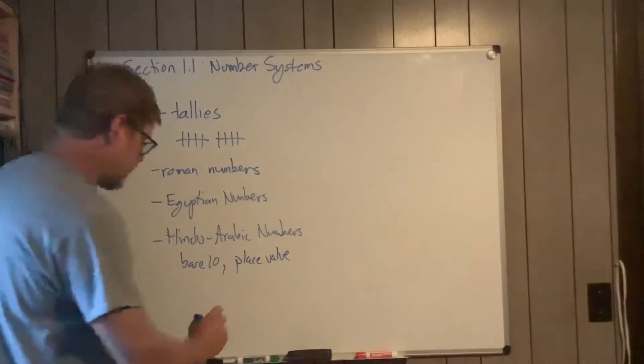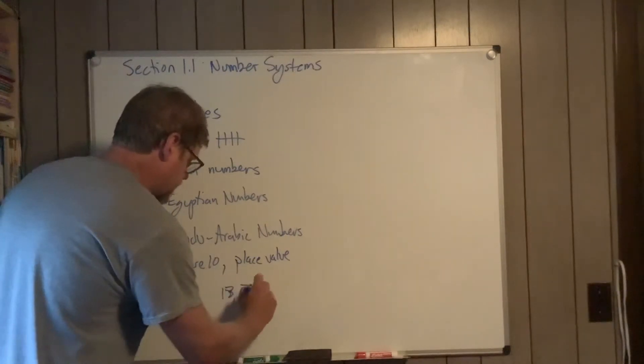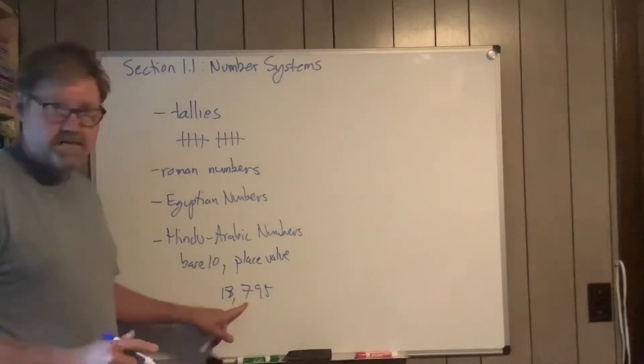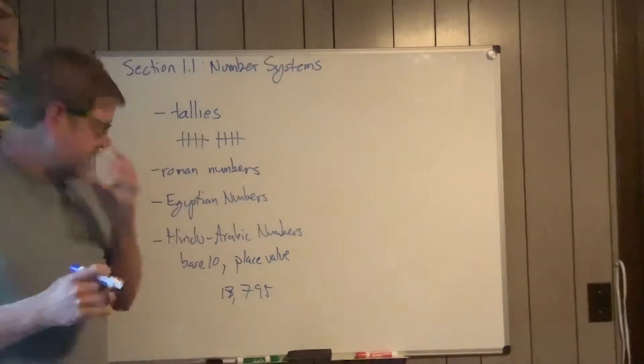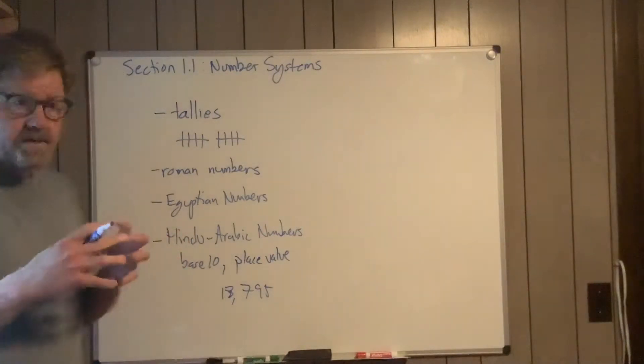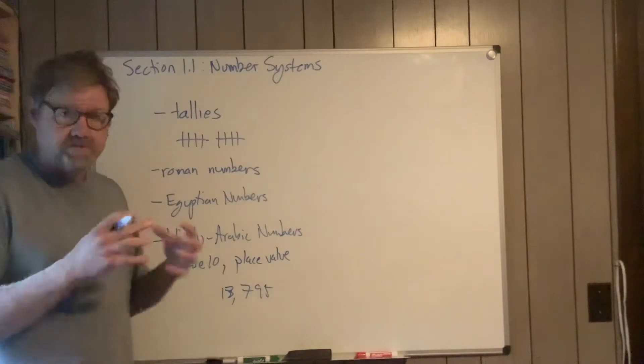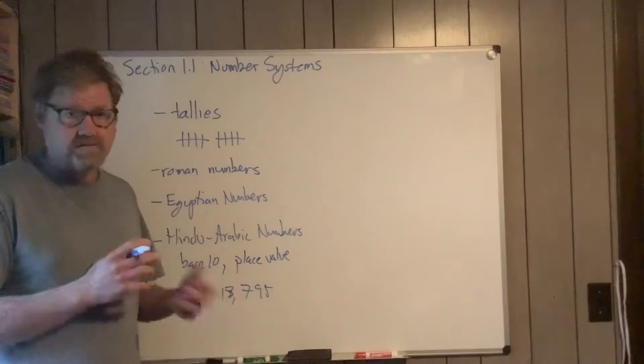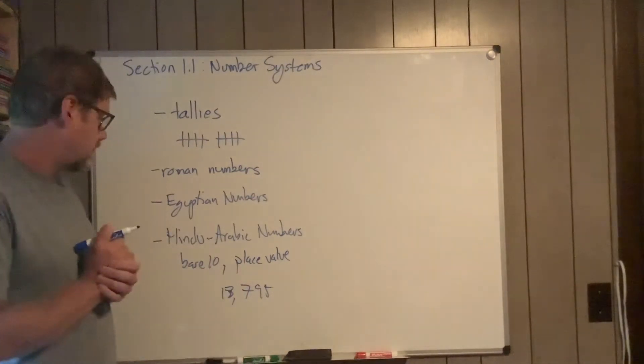When I write the number, say 13,795, the place inside the number tells me the value of it. That's what we mean by that. It's called Hindu-Arabic because both the Hindus and the Arabs came up with the number zero sort of independently, which was the key to making the whole system work. Without zero, it's really difficult to do such a system.